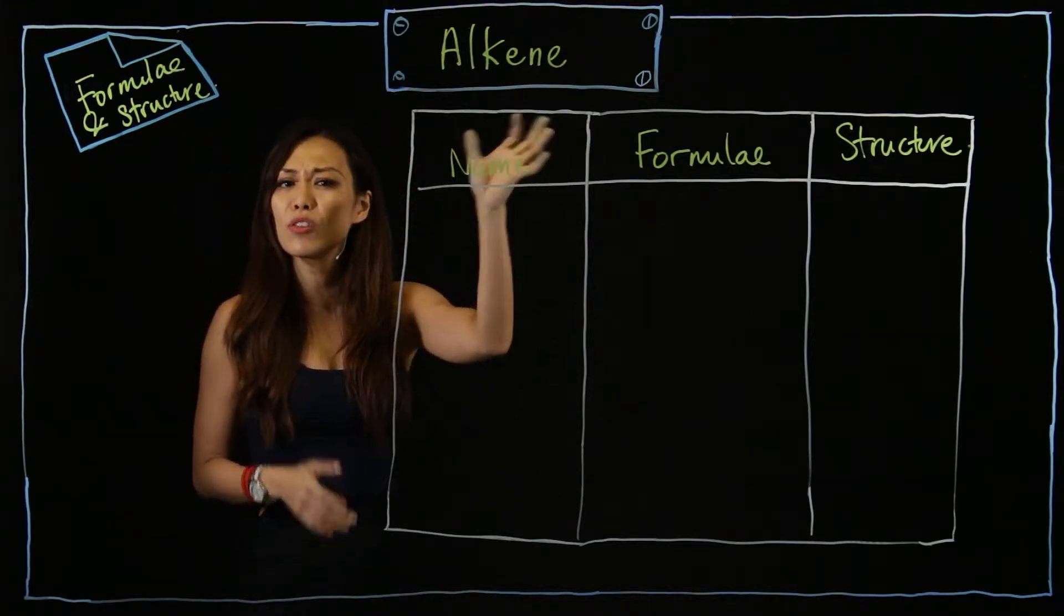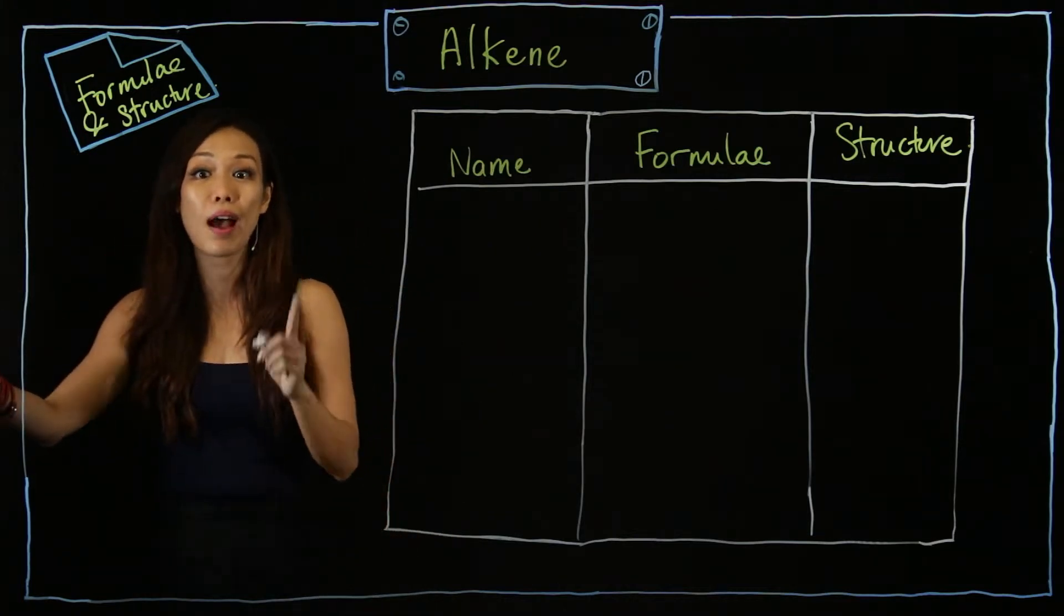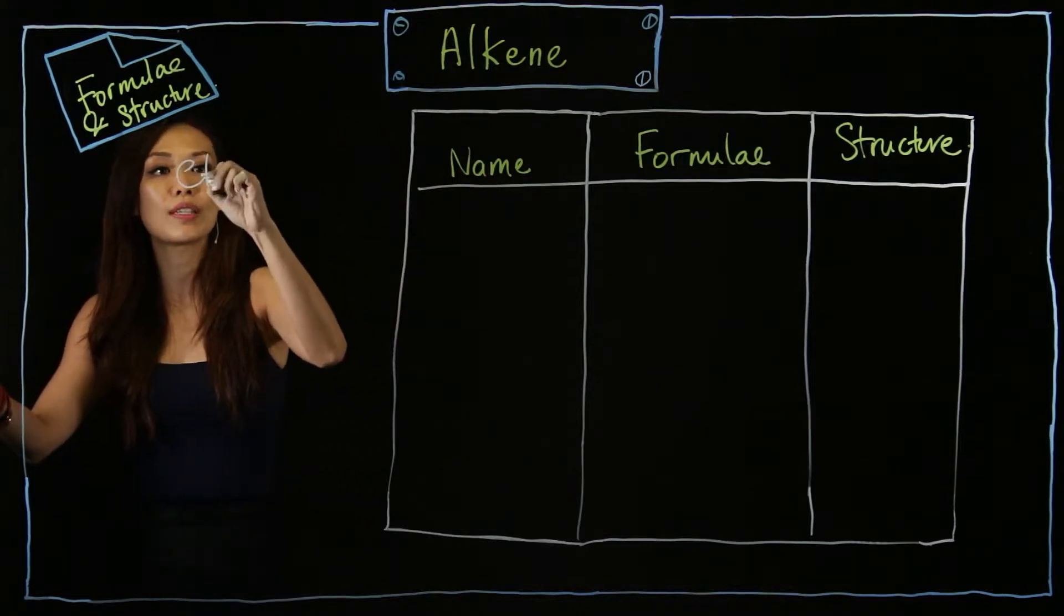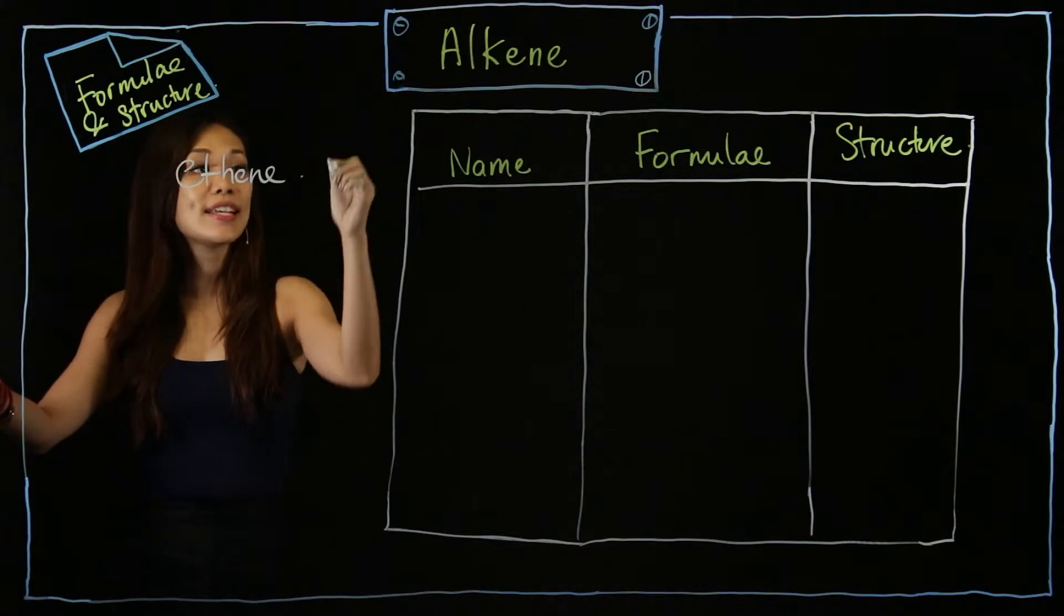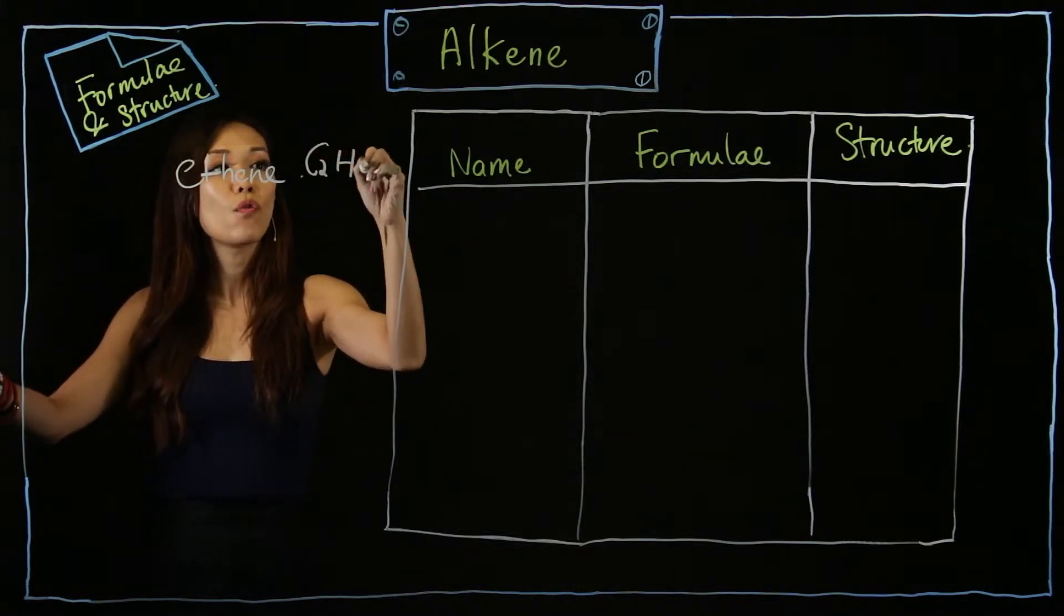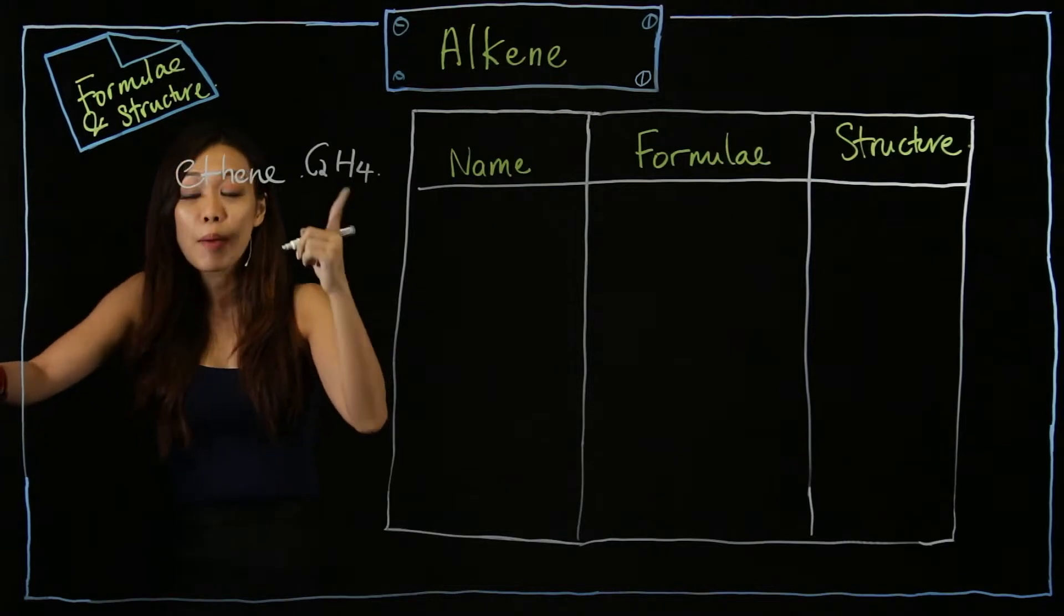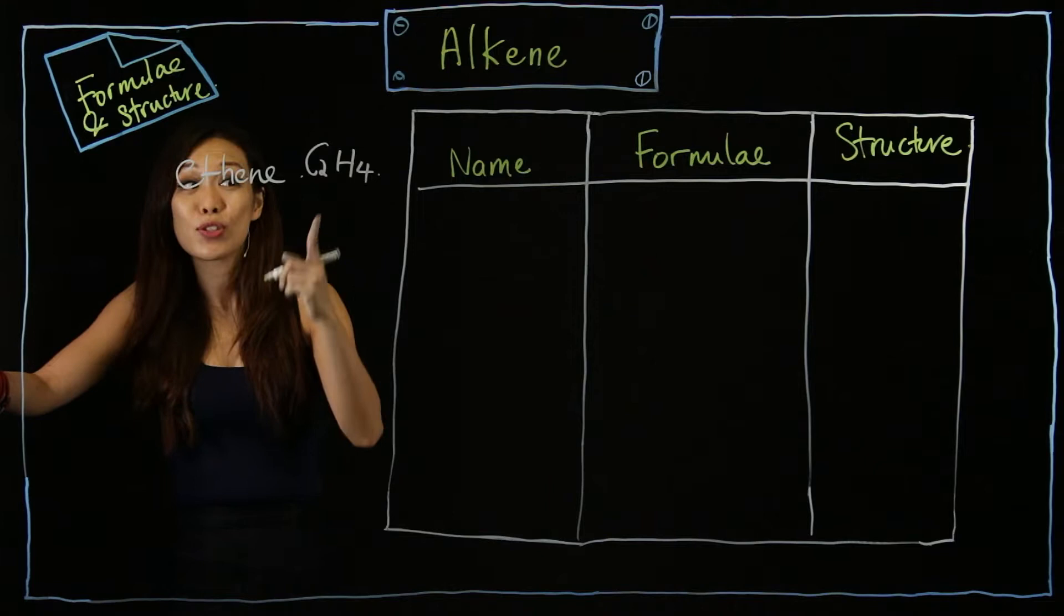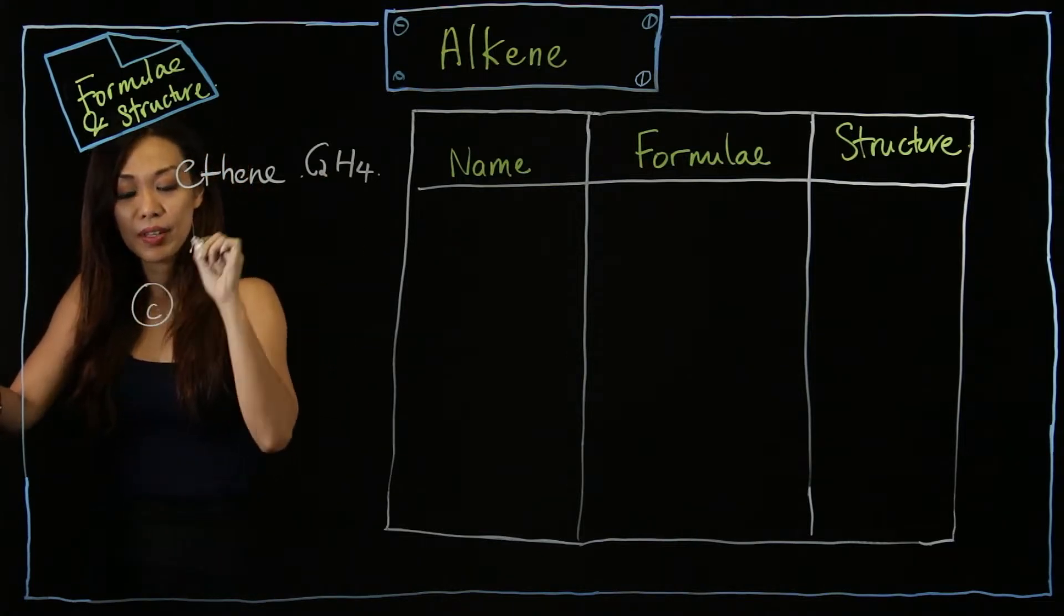What makes alkene so special? It's none other than their double carbon bond. For alkene, they start with ethene first. Ethene itself is C2H4. What makes it so special? If I ask you to draw out the chemical formula of ethene, you know it's a covalent bond. So it's C2, so I will draw one carbon.